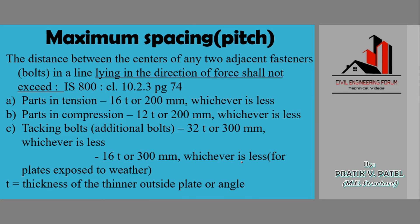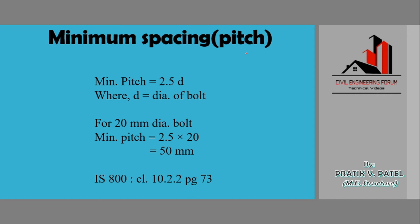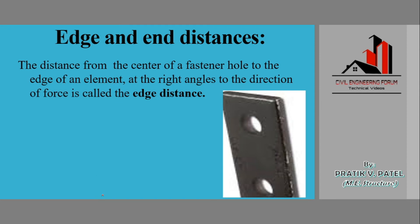Now for minimum spacing or pitch — the spacing less than this is not allowed. Minimum pitch is 2.5 times the nominal diameter of the bolt. For example, for a 20 mm diameter bolt, minimum pitch is 2.5 × 20 = 50 mm. Pitch distance less than 50 mm is not permitted in any case. This is given under IS 800:2007, Clause 10.2.2, Page 73.